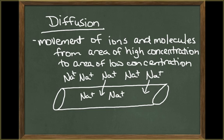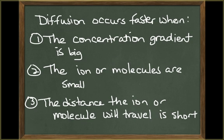Diffusion is the movement of ions or molecules from an area where their concentration is higher to an area where their concentration is lower. The difference between the high and low concentrations represents a concentration gradient. Diffusion occurs most rapidly when the concentration gradient is large, when the ions or molecules are small, or when the distance for them to travel is short.